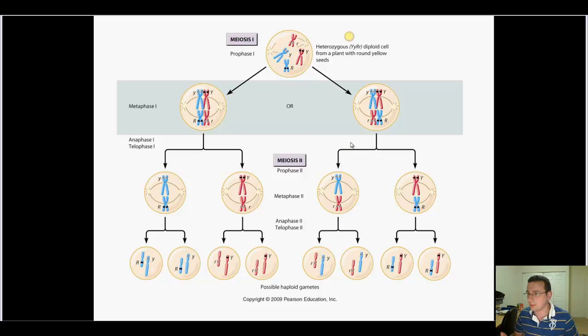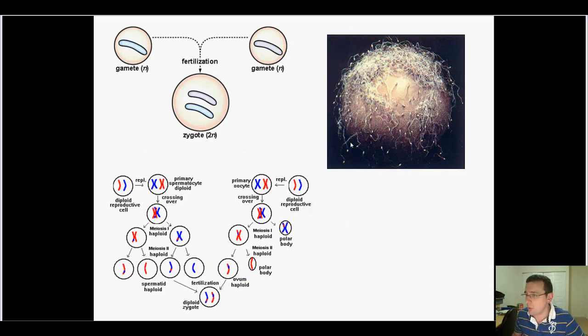Lastly, when the actual fertilization takes place, it's random. Which sperm wins? Which egg gets made? The gamete encounter is completely random. A random sperm will meet a random egg, which creates even more variation.